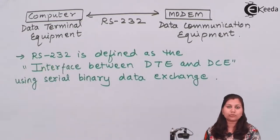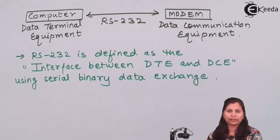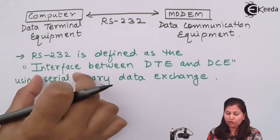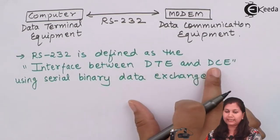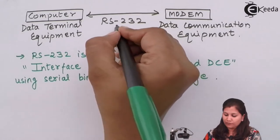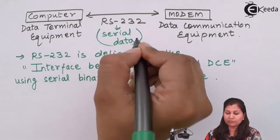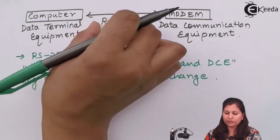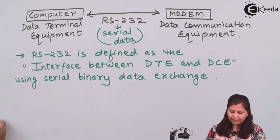RS-232 is defined as an interface — the communication path between two components. It is an interface between the data terminal equipments and data communication equipments using serial binary data exchange. It is always used to send or receive serial data whenever serial communication is taking place between two components.